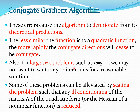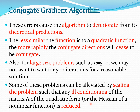For large problems you do not want to wait until k equals n (e.g., n=1000) for a reasonable solution. Some of these issues can be mitigated by scaling the problem to reduce ill-conditioning of the matrix A of the quadratic form. There is a process called preconditioning which is very often used in conjugate gradient methods.